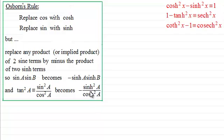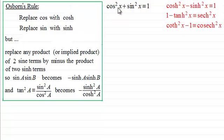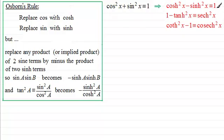I'll show you how we can use these rules when working with these identities. Suppose we take the identity cos squared x plus sine squared x is identical to 1. Replacing cos x with cosh x gives us cosh squared x. But here we've got sin x times sin x, so we would have sinh x times sinh x, but with this rule we need to put a minus in front of it. So we end up with cosh squared x minus sinh squared x is identical to 1.